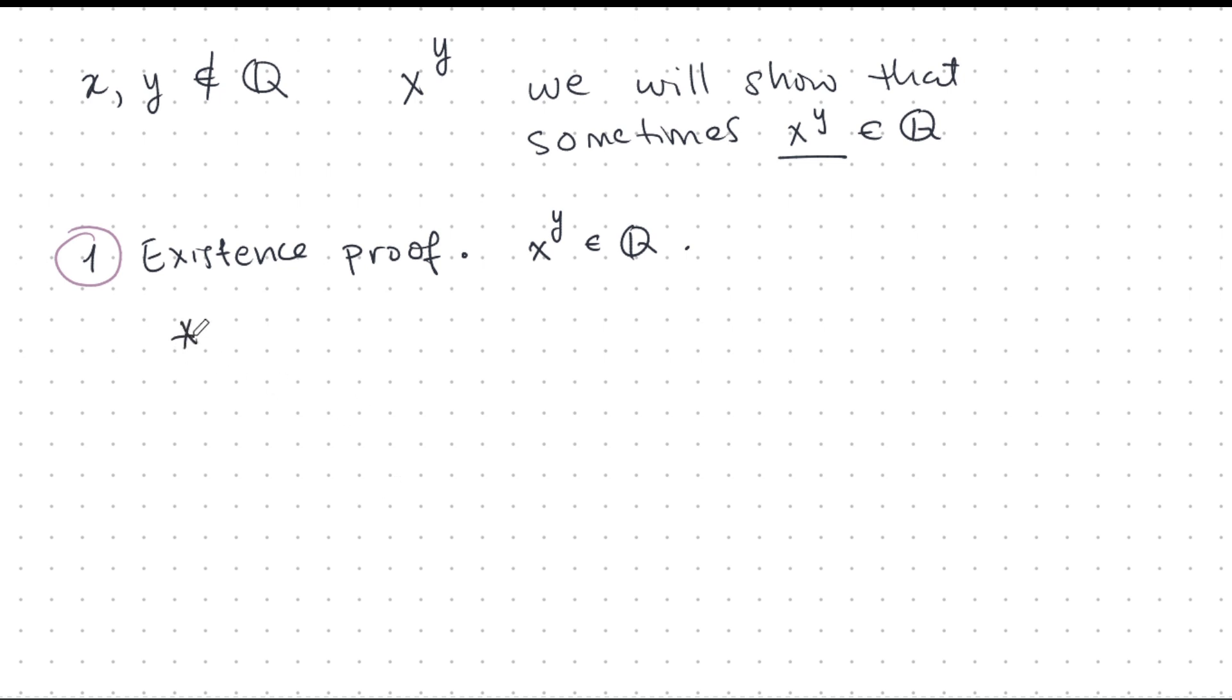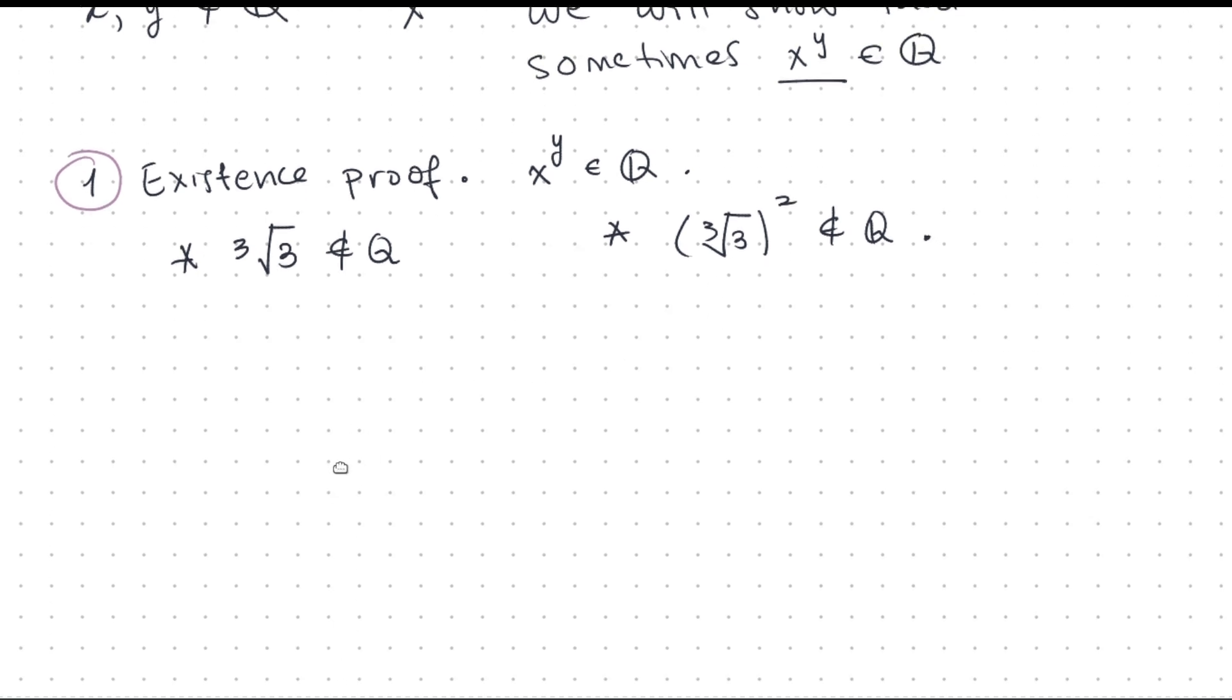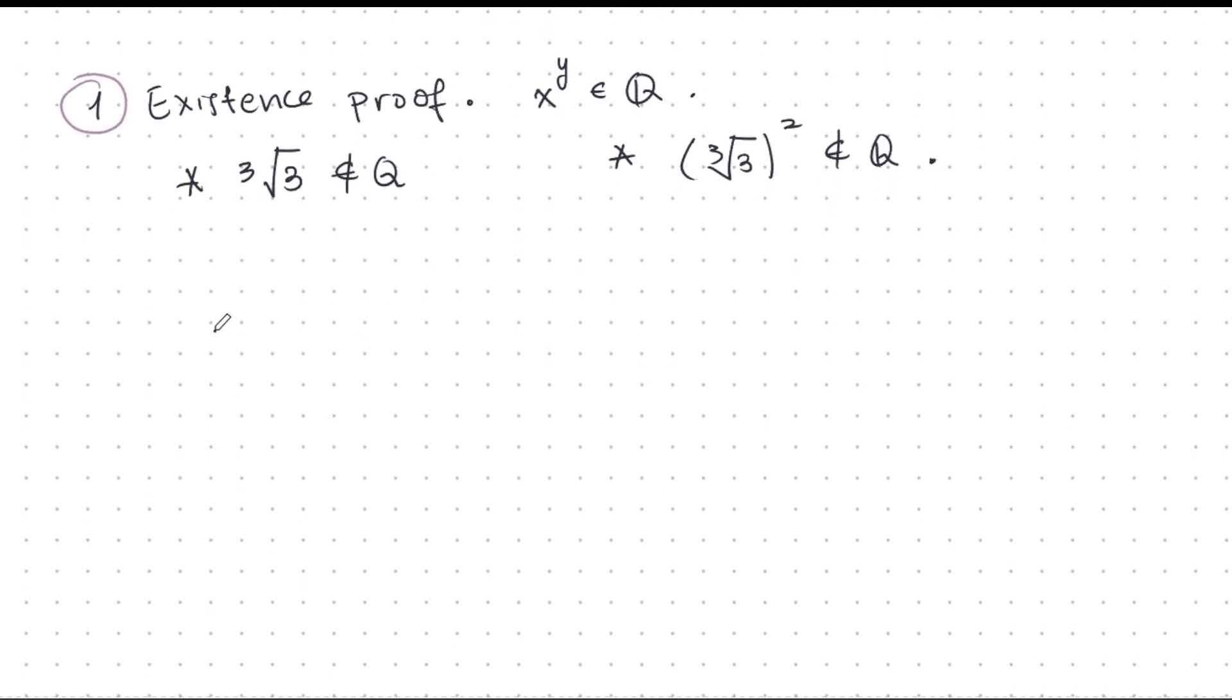To do this, I need some facts. I need to prove that the cube root of 3 is not rational, and also that the square of the cube root of 3 is not rational. The proof follows from these things in a very interesting way.